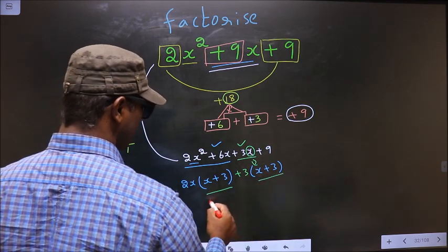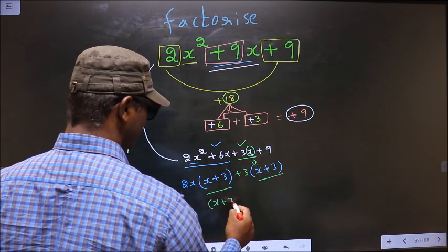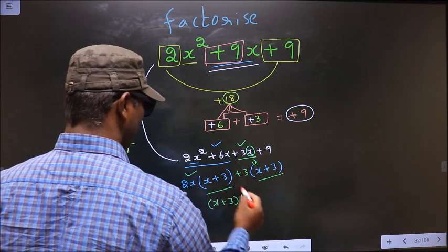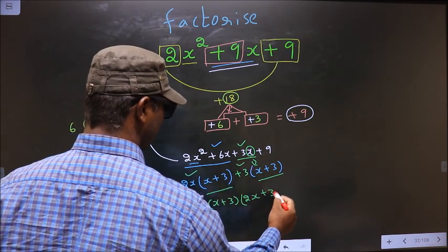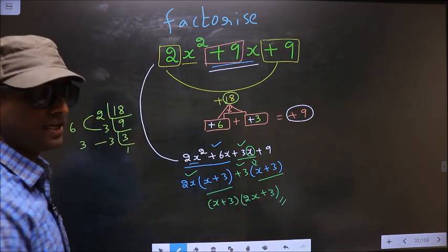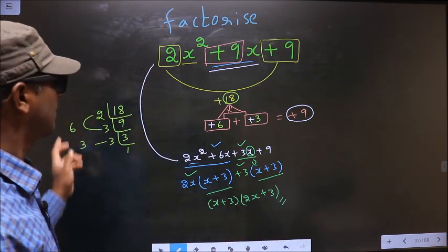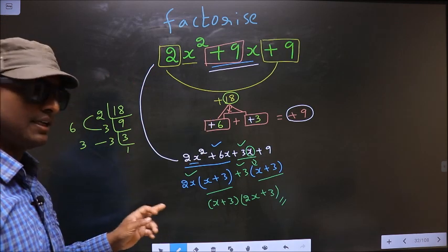Now you take out x+3 common. So here you have 2x and here you have +3. This is our answer.